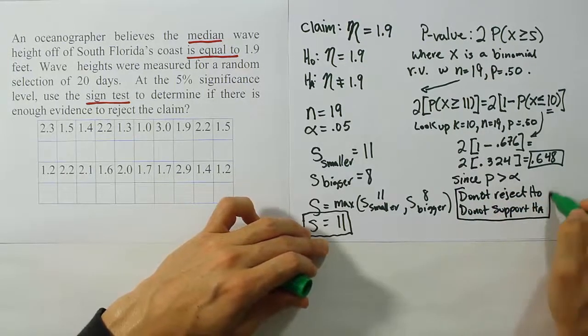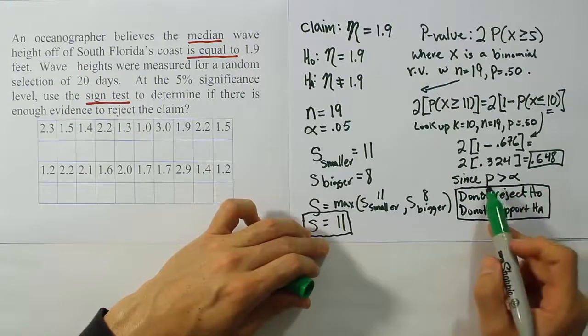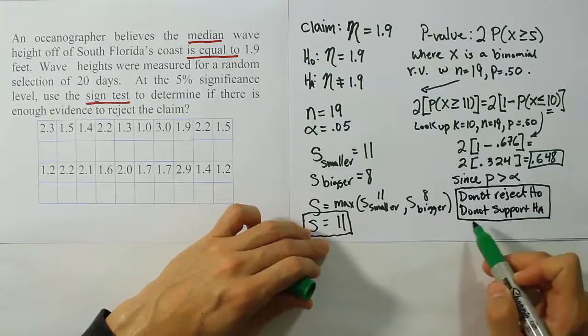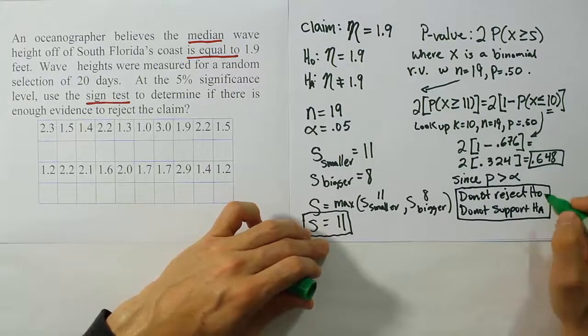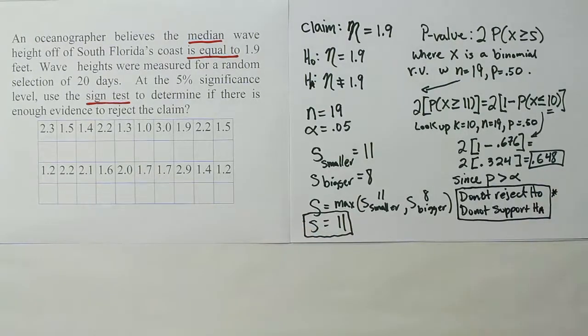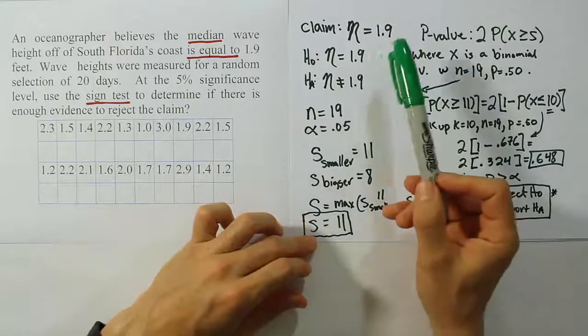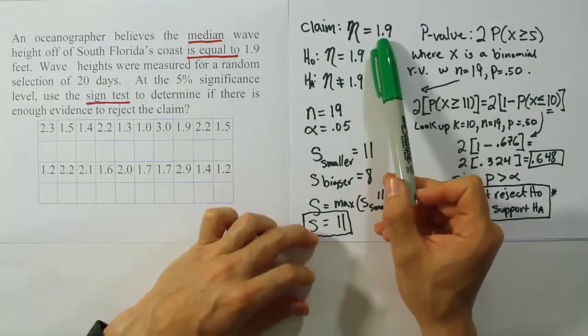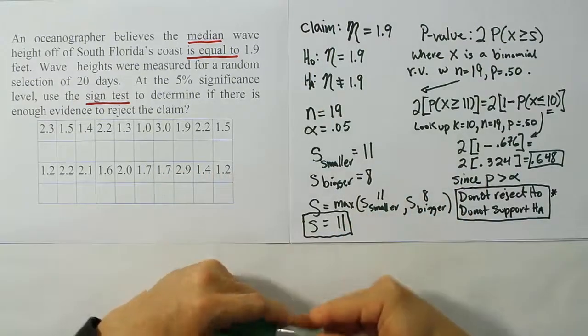Since p is greater than alpha we do not reject H0, and therefore we do not support HA. That's our initial conclusion there. Whenever p is larger than alpha we do not reject H0. In that case we do not support HA. Now we look at our claim and we see our claim is H0. So we're going to do our wording based on that. What we would say is that the sample data does not allow us to reject the claim that the median is 1.9.